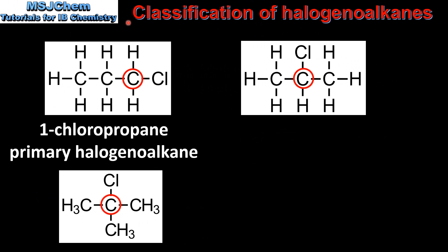Next we look at the classification of the halogenoalkanes. Our first example is 1-chloropropane which is a primary halogenoalkane. 1-chloropropane has a primary carbon atom — it's the carbon atom that's bonded to the functional group and it's also bonded to one other carbon atom.